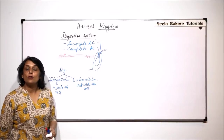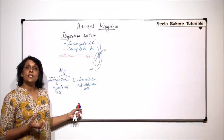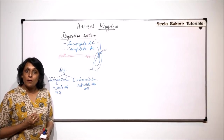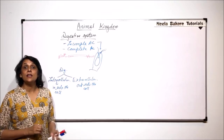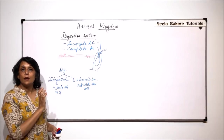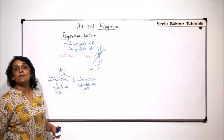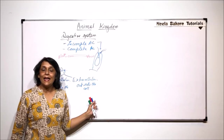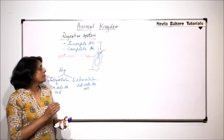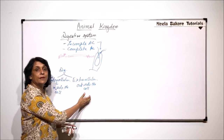Intracellular digestion can also be seen in WBCs which are phagocytic. They engulf a pathogen or foreign particle and digest it with the help of lysosomes, so digestion is taking place inside the cell. But in the complete digestive system of higher animals, digestion is normally extracellular. Animals can be compared on whether they have incomplete or complete alimentary canals.